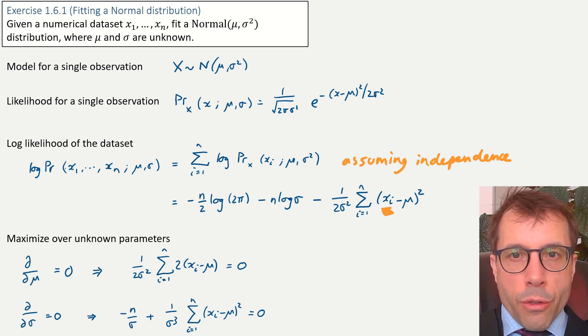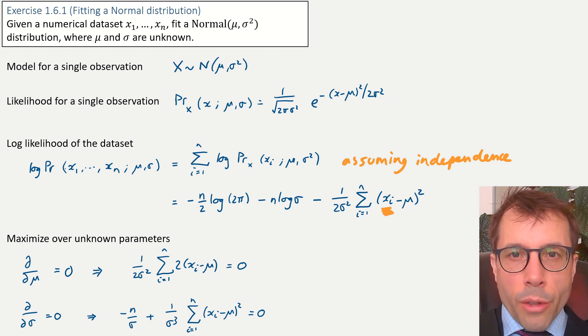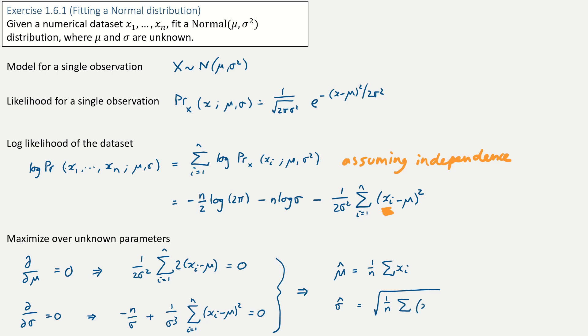We now have two simultaneous equations and two unknowns. Solving them together gives the maximum likelihood estimates. That's the procedure for fitting a generative model. In the printed notes there's another worked example, and it's a good idea to go through that one to test your skill.